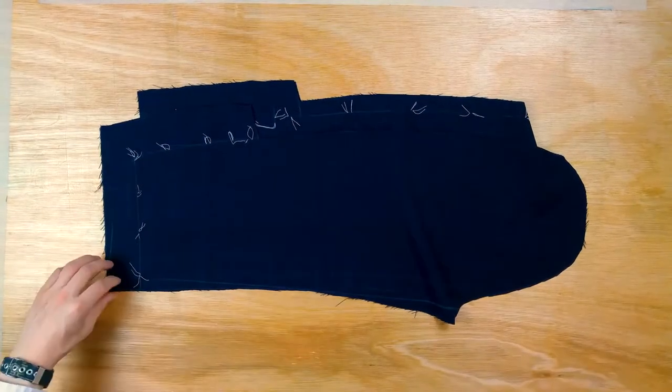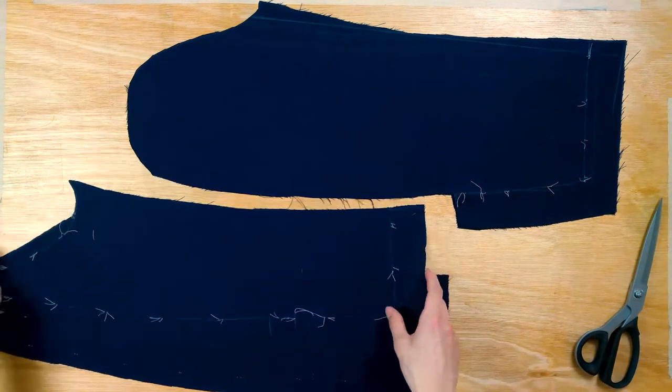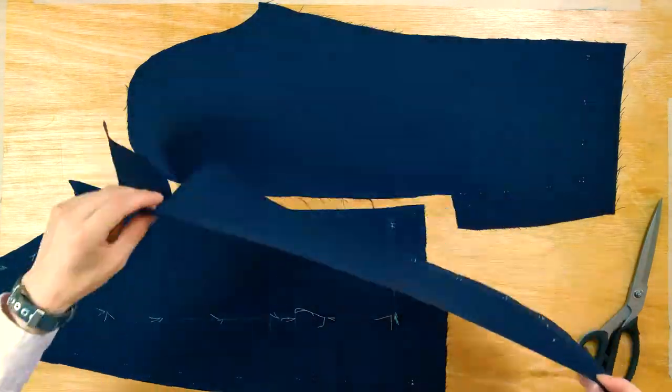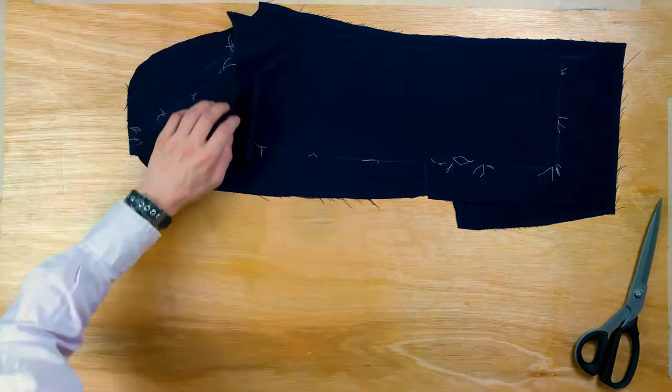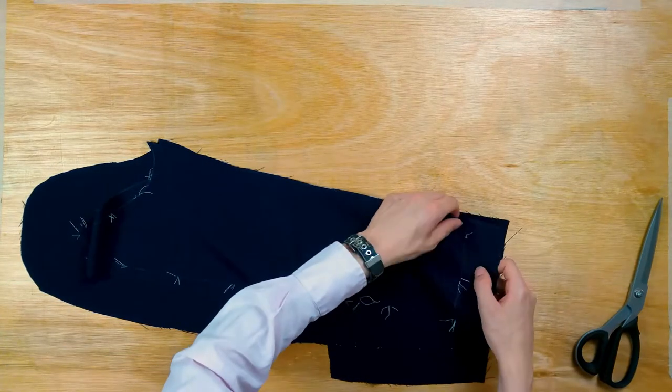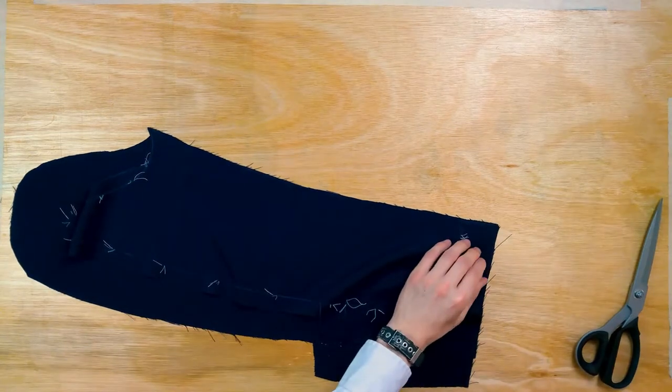If it isn't, then you can use the inlay you gave the undersleeve to move the line, increasing or decreasing it as appropriate. Having decided it's correct, baste and machine the two parts of the sleeve together along the short seam.